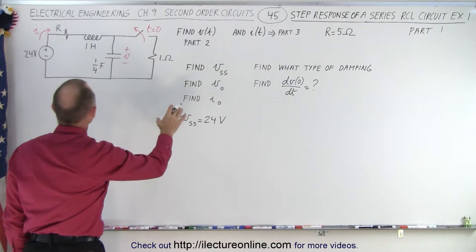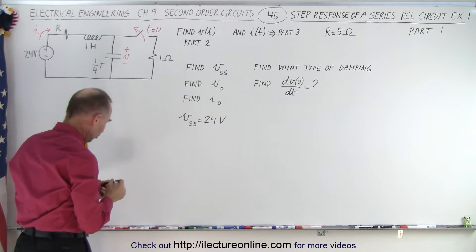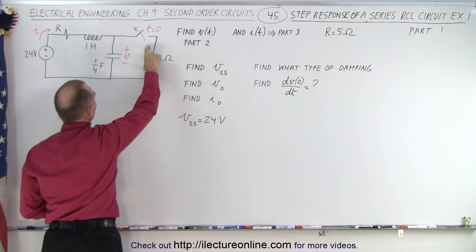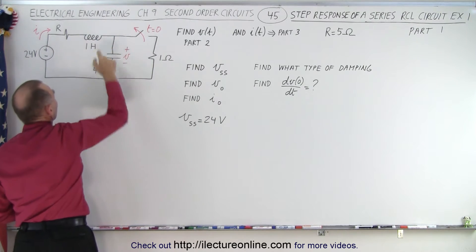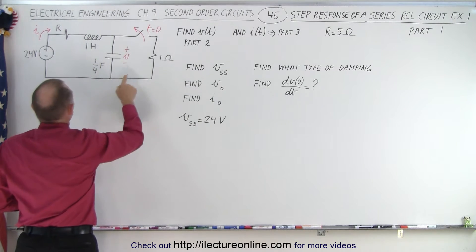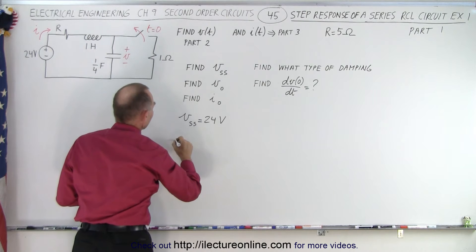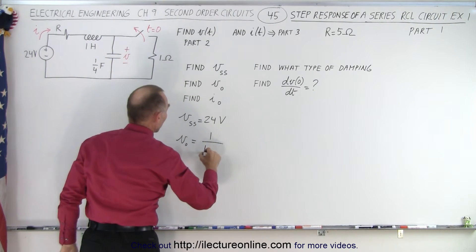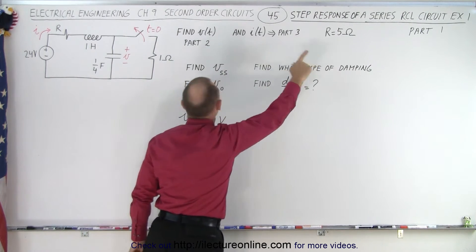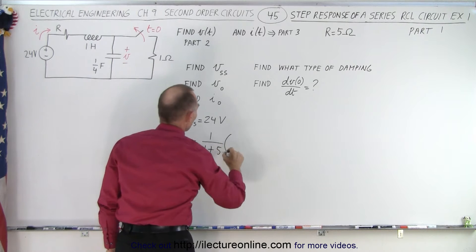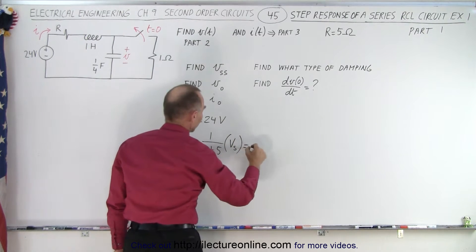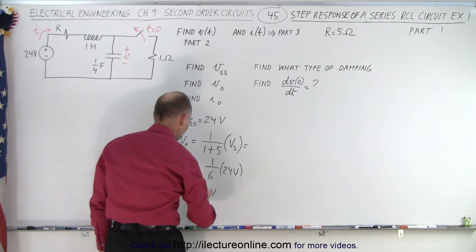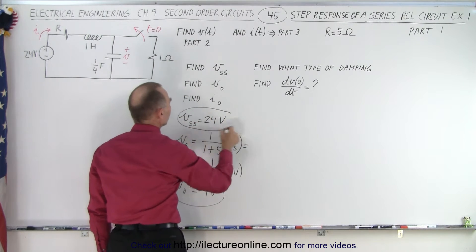What will be the initial voltage across the capacitor just as we open up the switch? Before we open the switch, current is flowing and the voltage across the capacitor equals the voltage across the 1 ohm resistor. The inductor doesn't offer any opposition to the current, so it's simply a voltage divider. The initial voltage across the capacitor equals 1 over (1 plus 5) times 24 volts, which is 1/6 times 24 = 4 volts. So the initial voltage is 4 volts and the steady state voltage is 24 volts.